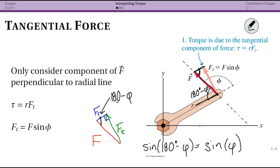So in my triangle, the angle that is opposite to tangential force has an angle of 180 degrees minus phi. Well, sine of 180 minus phi is mathematically equivalent to sine of phi.